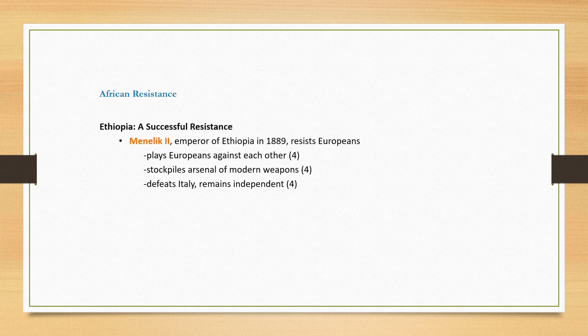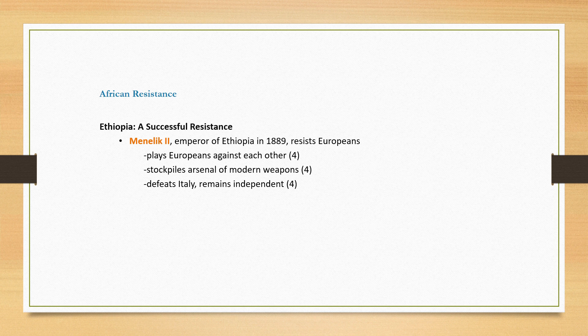In Ethiopia, the emperor Menelik II managed to resist the Europeans. Ethiopia is one of the only countries in Africa that successfully resisted European imperialism throughout their entire history. They did so in clever ways — for example, they played Europeans against each other by seeking help from one rival group against another. They also maintained a large stockpile of modern weapons. On multiple occasions, most recently in the Second World War, Ethiopia managed to defeat Italy and maintain their independence.